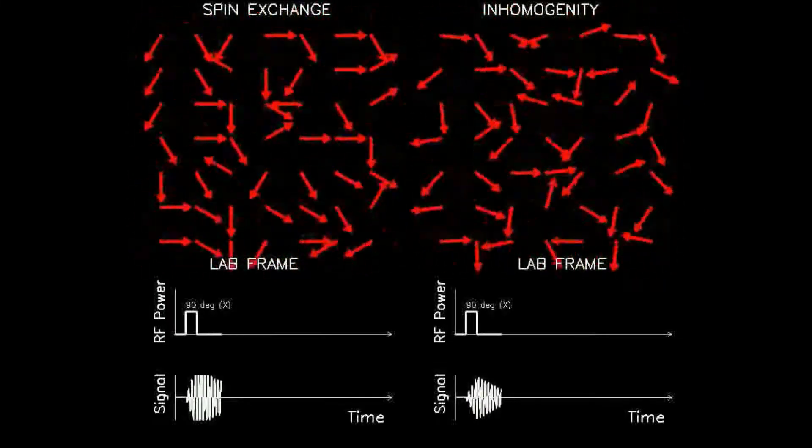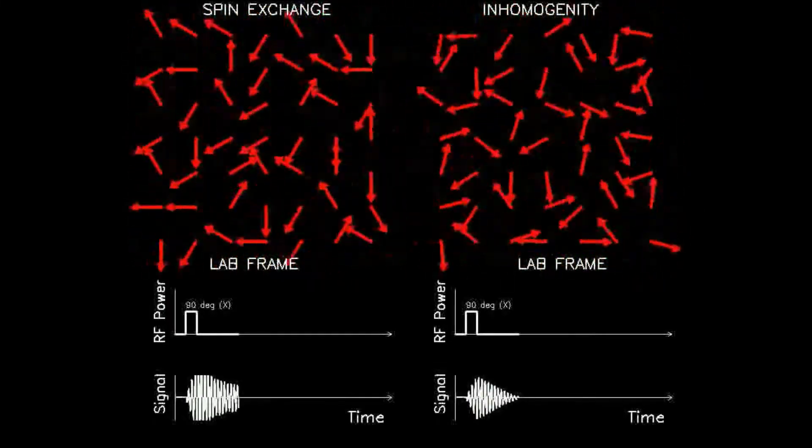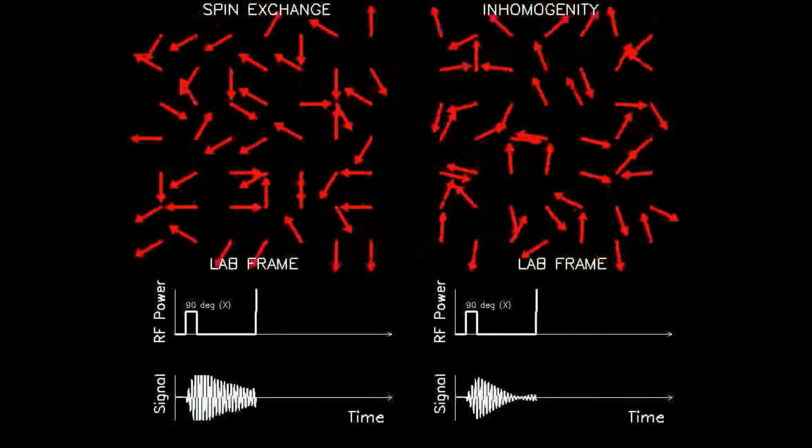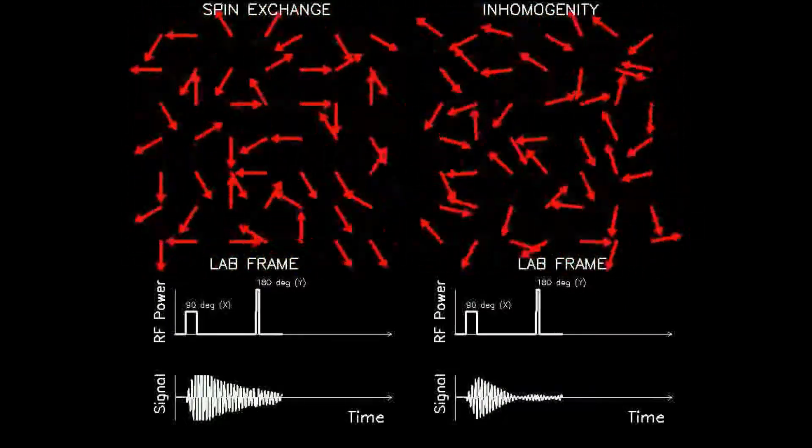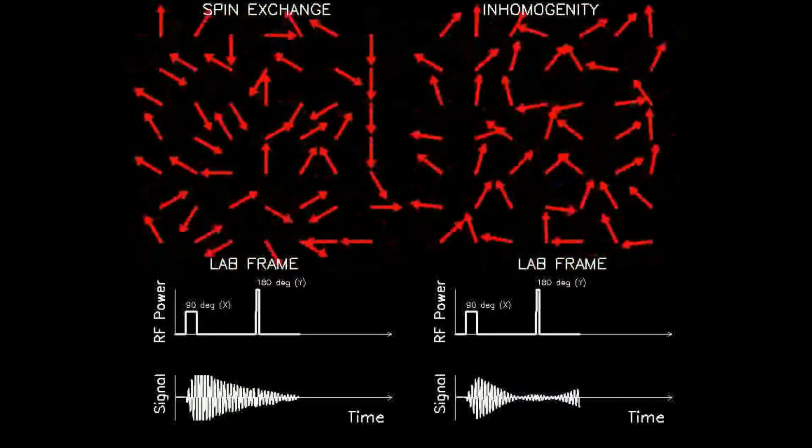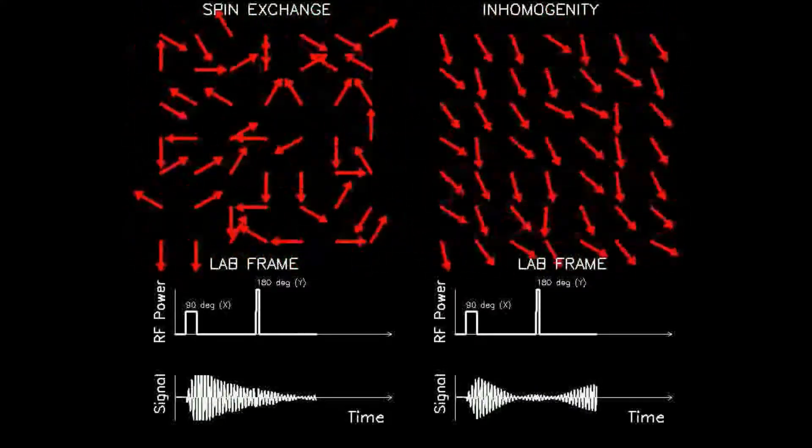The two panels differ in their mechanism of relaxation. The top left uses spin-spin dephasing, whereas the top right uses inhomogeneity dephasing. Each panel has its own timelines displayed below.